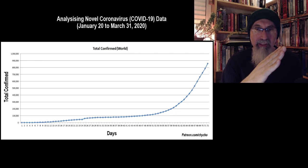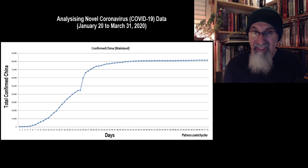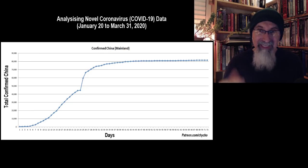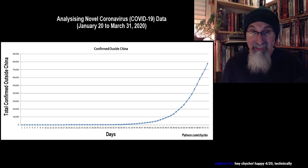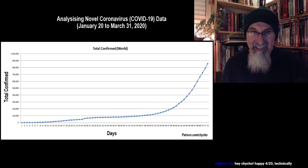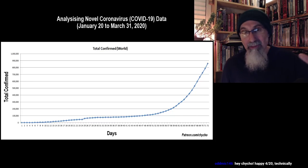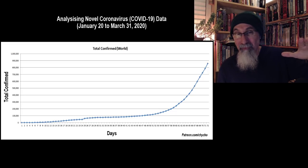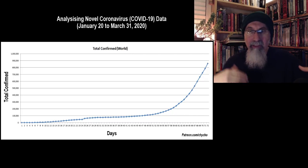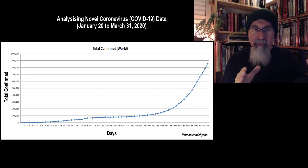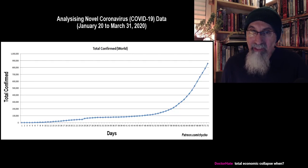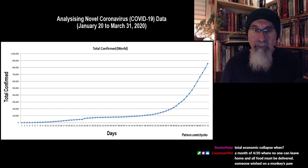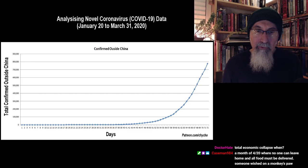If the graph is still going like this, what's the driving mechanism? It's not China — China has flattened out. So it must be confirmed cases outside of China. The slope outside China is a lot steeper. The driving mechanism for global confirmed cases kicking up is not China based on reported cases, but the rest of the world.